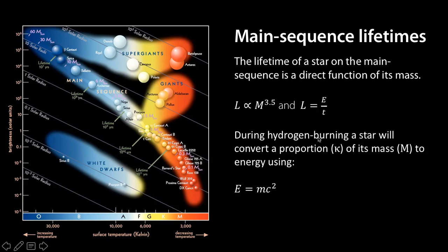Now over its lifetime burning hydrogen a certain mass of a star, a proportion which we call kappa, is converted to energy and the form of energy conversion is E equals mc squared so luminosity equals E over T equals mc squared over T.